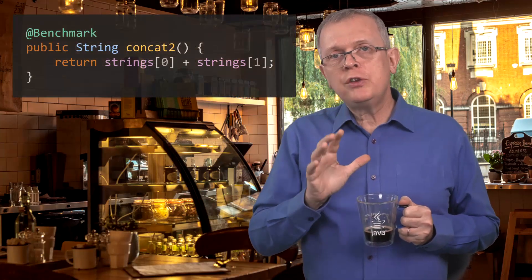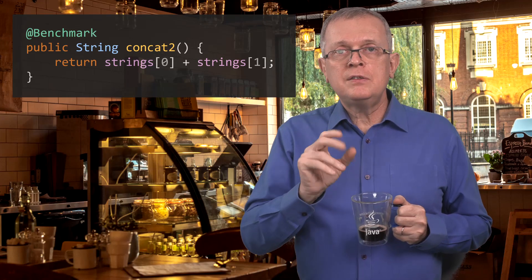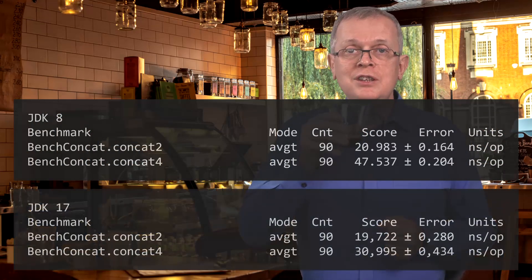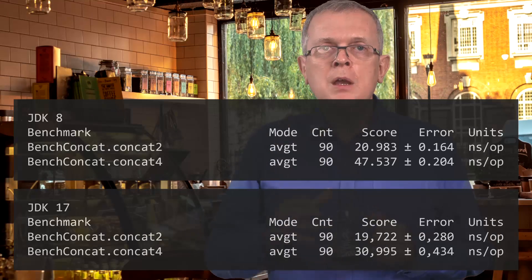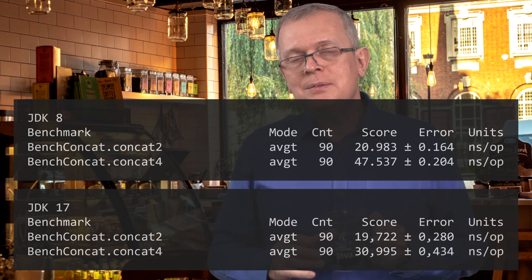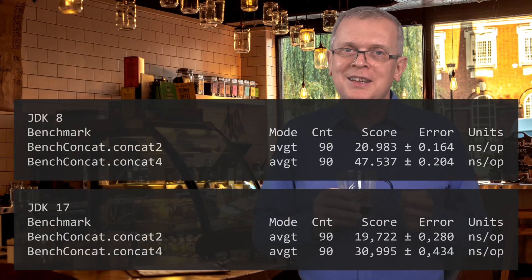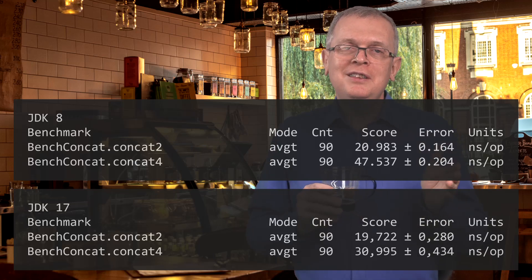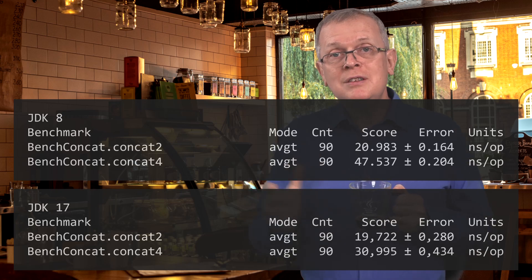Let us take a look at the first benchmark. In this benchmark, we are just concatenating two strings together, and in the second one, four strings together. Then we run JMH, which produces results with JDK 8 and with JDK 17. JMH tells you that a result is 20.9 nanoseconds plus or minus 0.16.